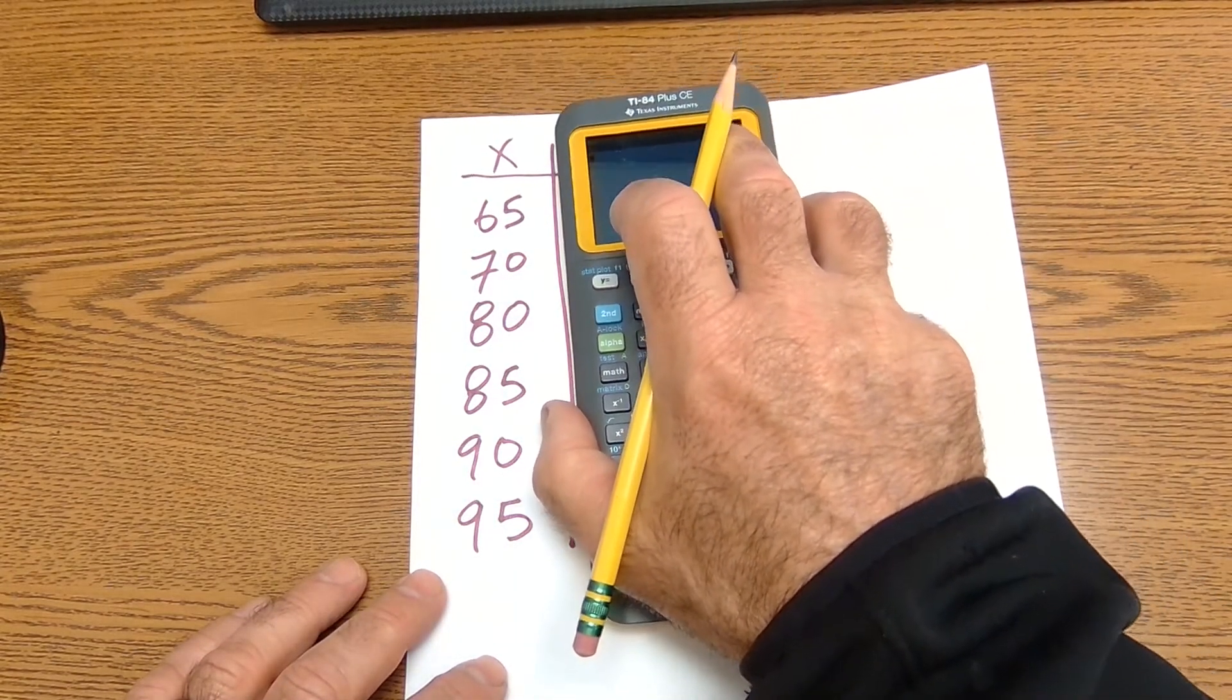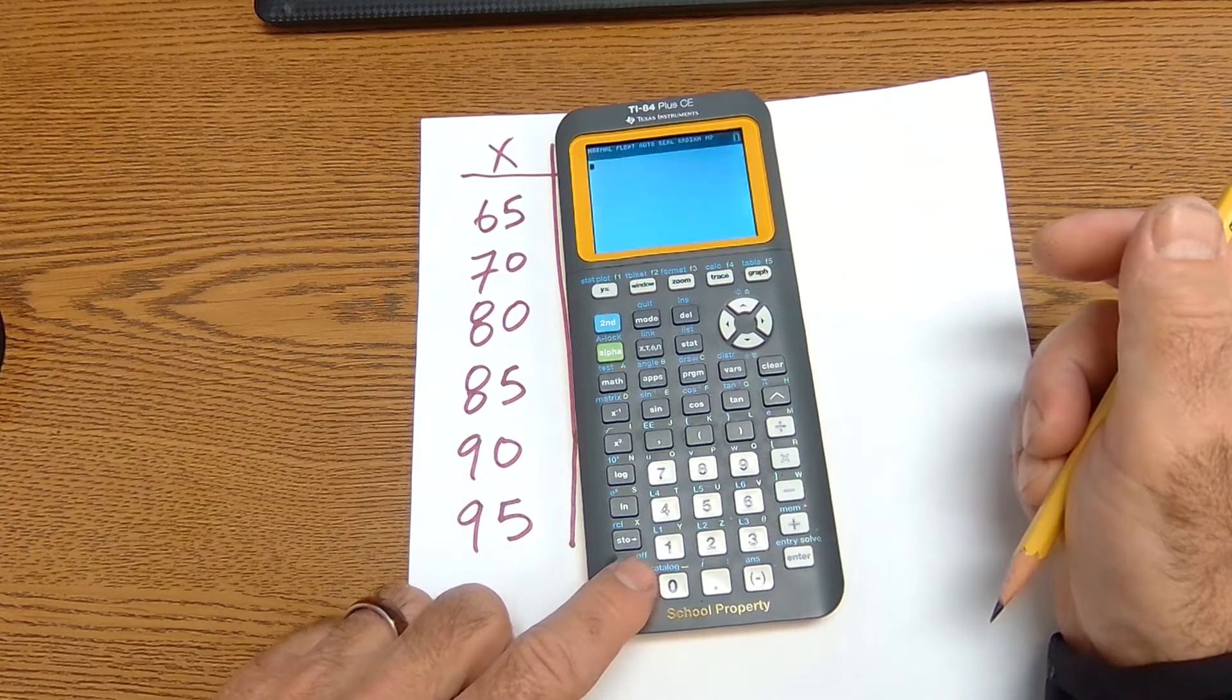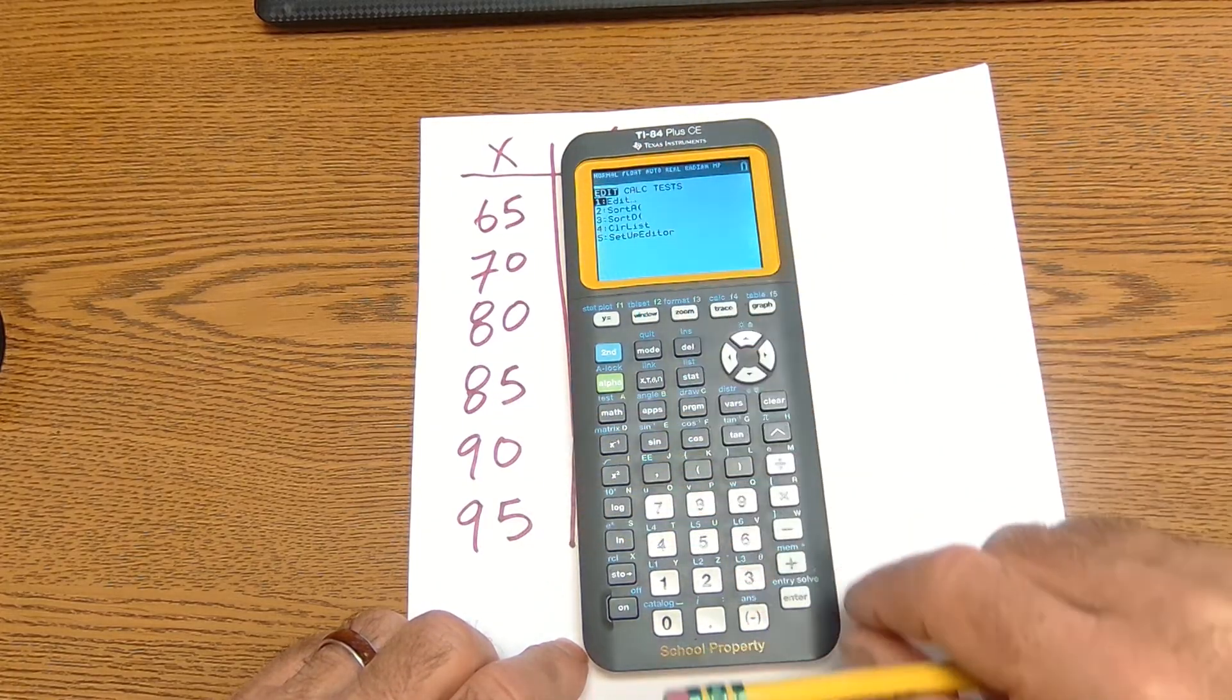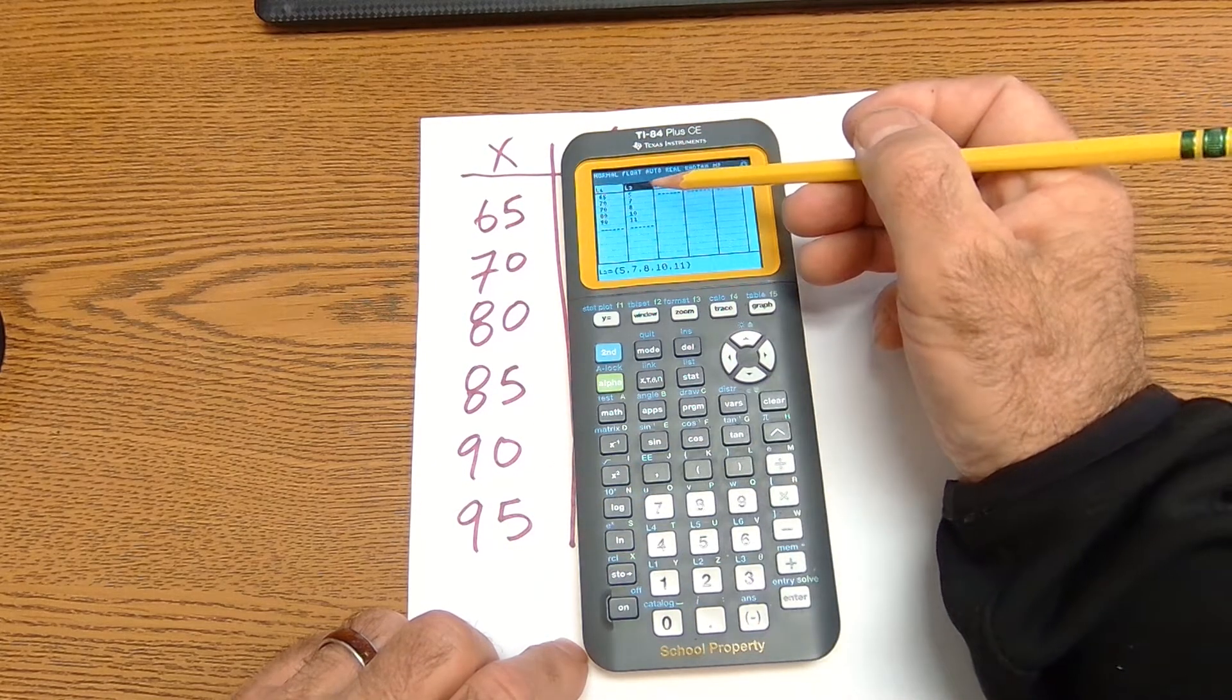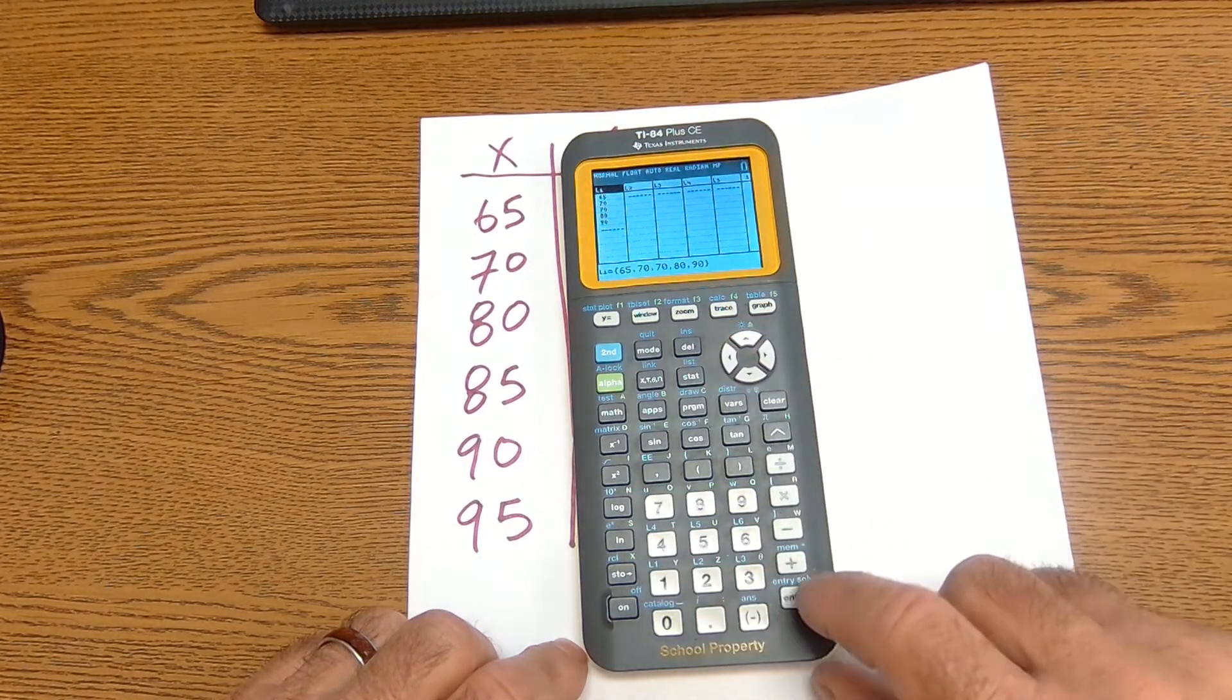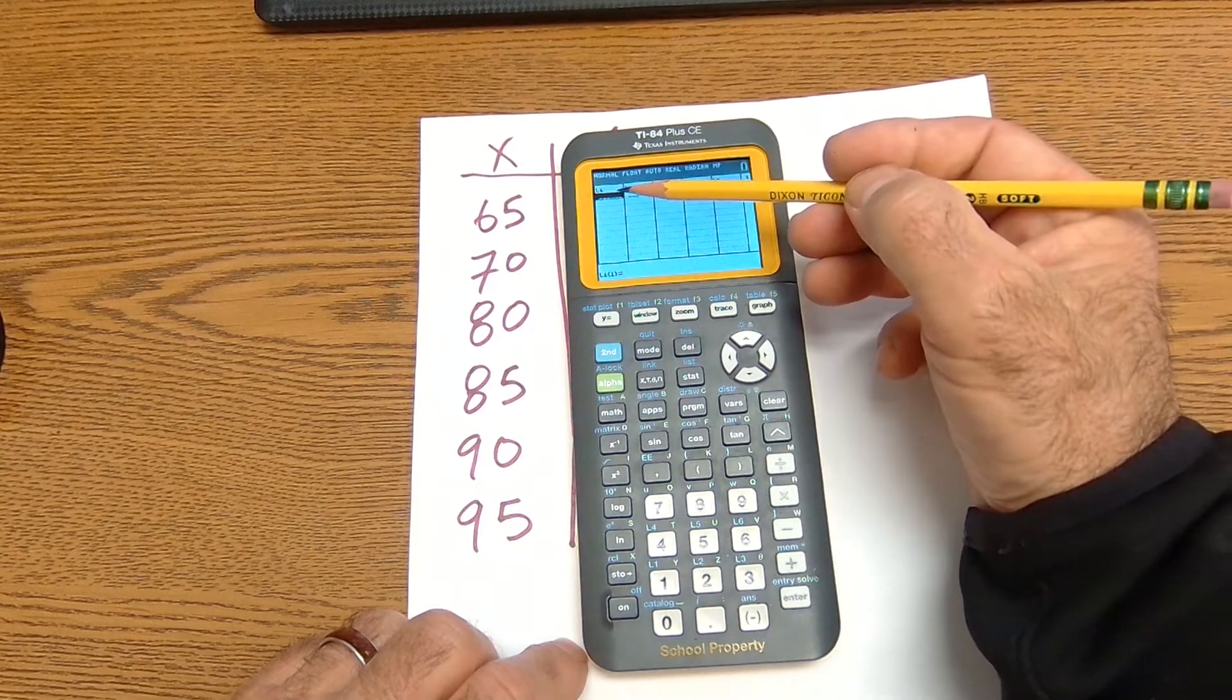So step one is one variable statistics. I have these six test scores here. I turn this graphing calculator on. I go to stat. First thing I want to do is edit my list. So I hit enter. I'm going to scroll all the way to the top until that list is highlighted. I'm going to clear that list. Enter. And I'm going to go over to list one. Clear it. Enter. Now I'm going to enter my values in list one.